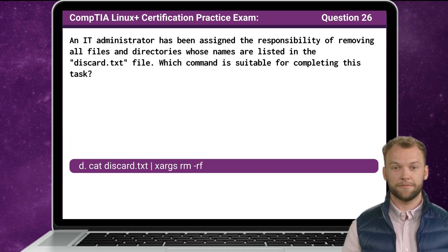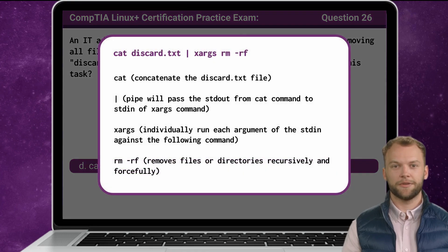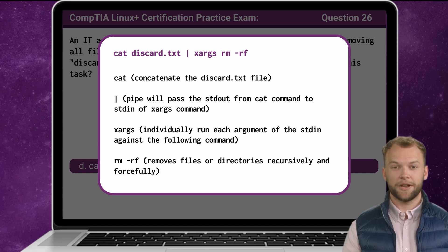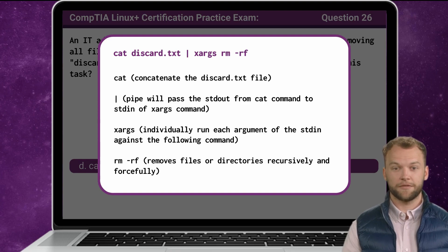The answer is D. Now that we know the answer, let's break it down. Cat is our first command — this command will concatenate the discard.txt file. The vertical line or pipe will receive the standard output from the cat command and pass it as standard input to the xargs command. The xargs command will then individually run each argument against the rm -rf command, which removes files or directories recursively and forcefully, removing all files and directories listed in the discard.txt file.